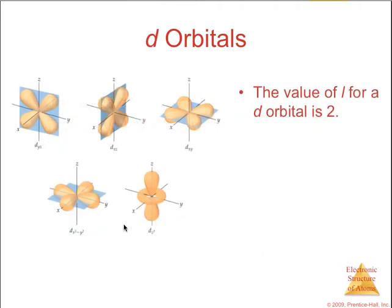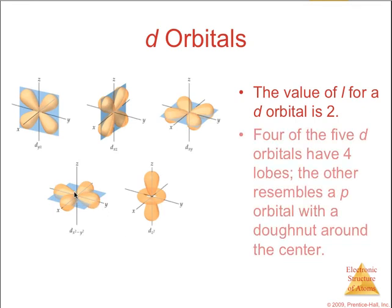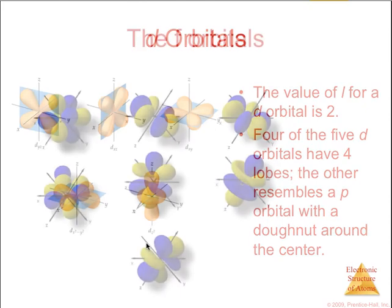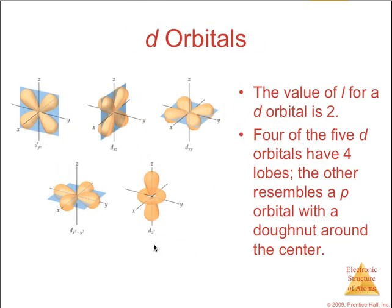Moving on to the d orbitals, most of these look like four-leaf clovers, with the exception of the dz2 orbital, which kind of looks like a p sublevel with a donut around it. You should have an idea at this level what a d orbital looks like: four-leaf clovers oriented about different planes about the nucleus, and a p orbital with a donut.